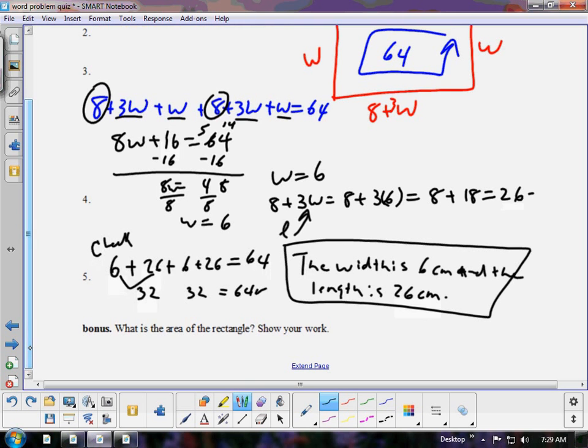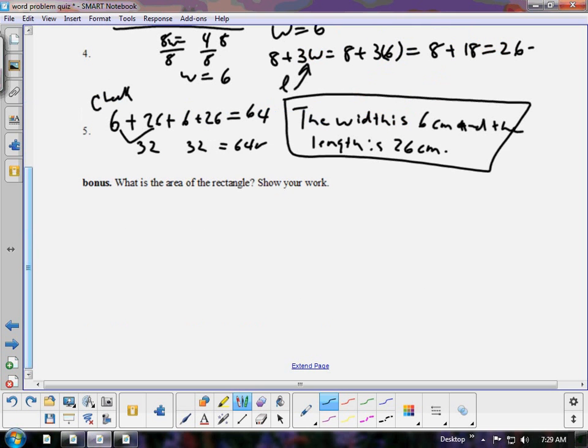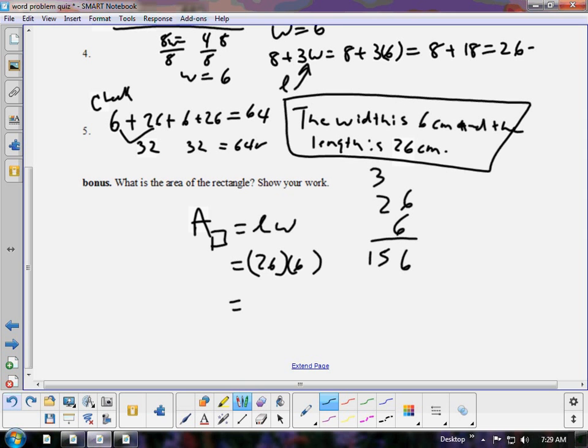So, there we have the Finney 5. This one is a bonus question. Area of the rectangle. Show your work. Area of a rectangle is length times width. So, in this case, it would be length times width. The length is 26. The width is 6. 6 times 26. Now, be careful here. 156 centimeters squared. Because we're multiplying centimeters times centimeters to get centimeters squared.